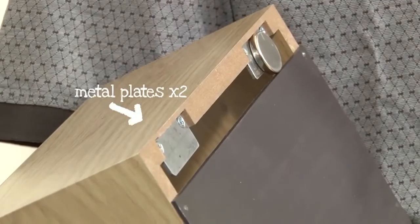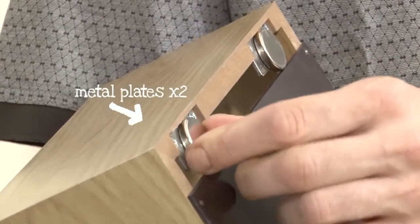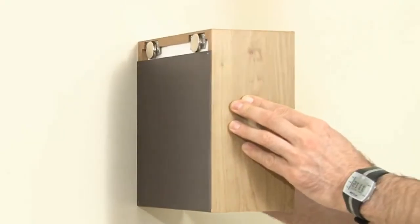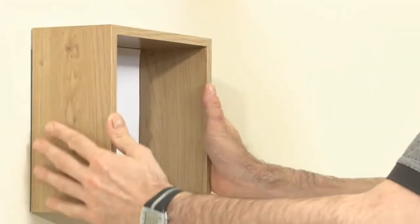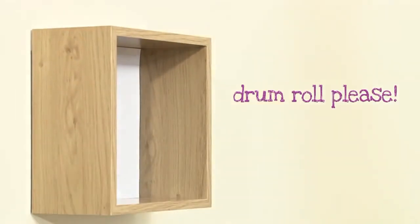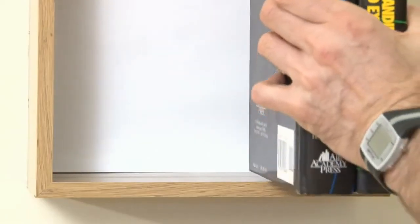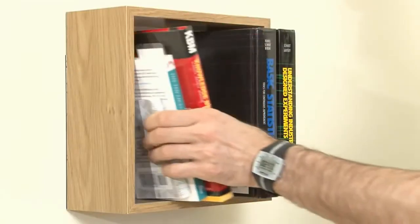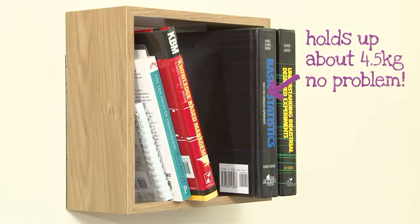Then we screwed in a couple of metal plates, and on these plates we put two strong magnets. Then we put the shelf on the wall. It was at this point we were all thinking, would it hold when we put the books on? And guess what, it held firm, no problem at all.